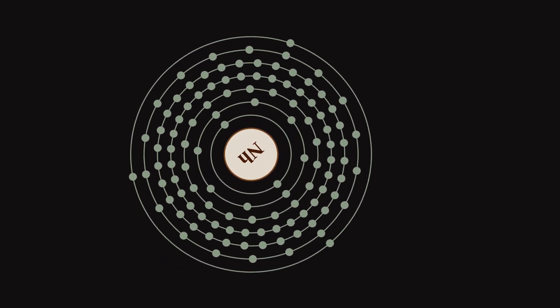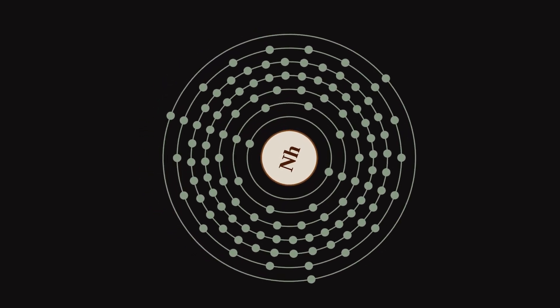Preliminary experiments in 2017 showed that elemental Nihonium is not very volatile. Its chemistry remains largely unexplored.